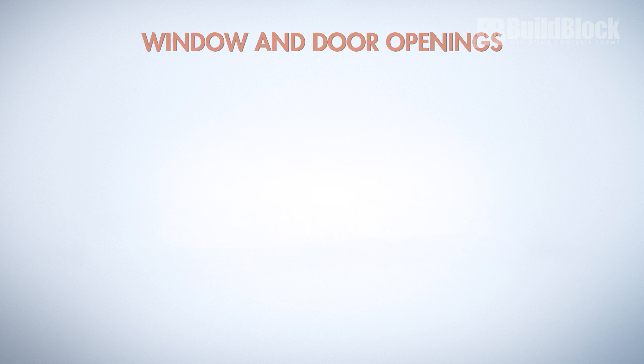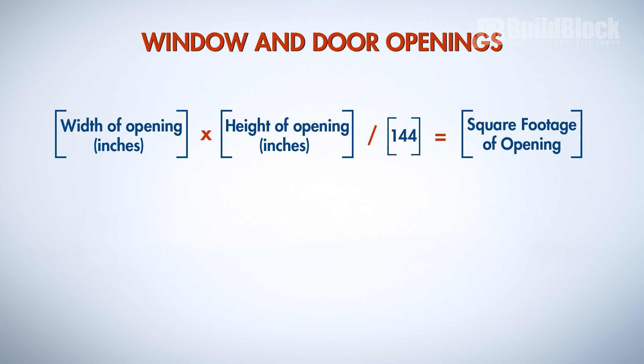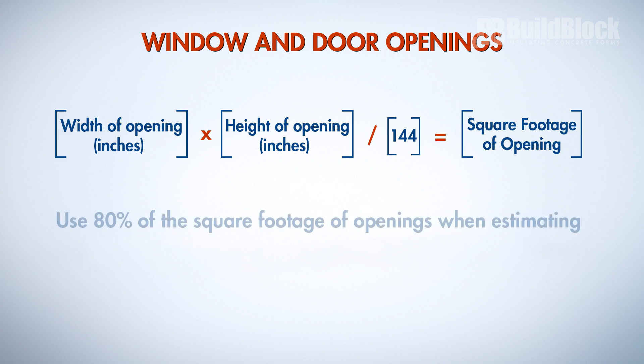To determine the square footage of window and door openings, multiply the width by the height in inches and divide by 144. Use 80% of this number when estimating, to ensure you have enough material for any mistakes or changes.